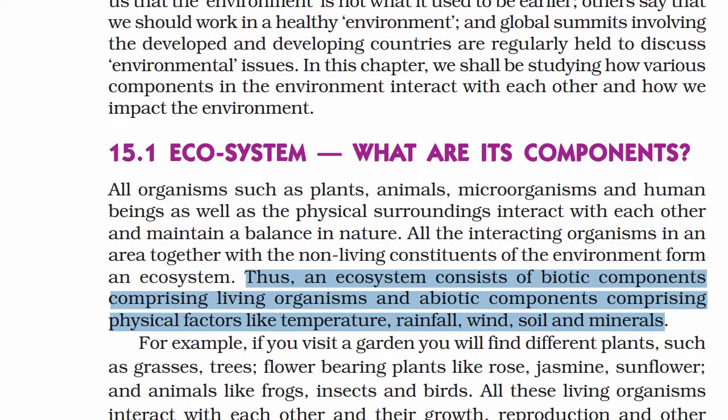An ecosystem consists of biotic components — comprising living organisms — and abiotic components, comprising physical factors like temperature, rainfall, wind, soil, and minerals. Biotic components are the living organisms; abiotic components are the physical factors such as temperature and water.